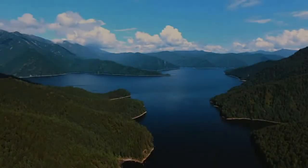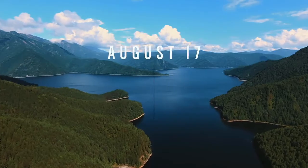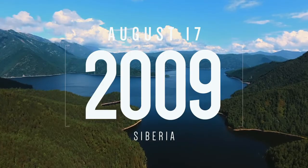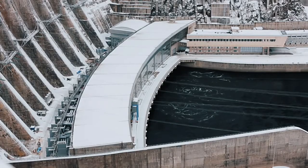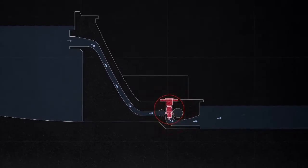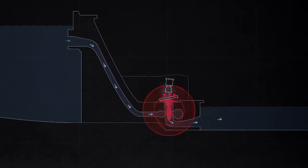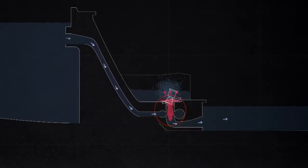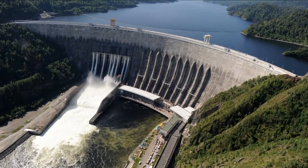Just a few hours later, at 8:13 AM, Unit 2 experienced a load rejection, which was followed immediately by a loud bang heard in the control building adjacent to the powerhouse. Unit 2 essentially ejected 1,900 tons of steel into the air, allowing a jet of water to shoot straight up through the roof of the power facility. Seconds after the geyser blew off the roof, another very loud bang was heard downstream from the powerhouse.